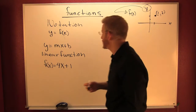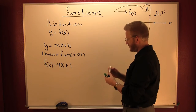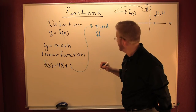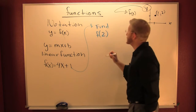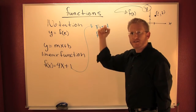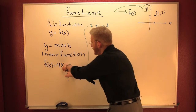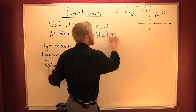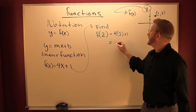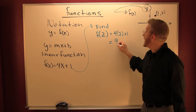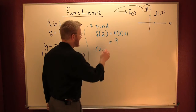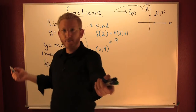This is very similar to what you were doing in the last chapters. What if I wanted to find, using that function, find F of 2? So what do you do? You plug it in. Everywhere I see an X, I'm going to put a 2. I'm replacing that X with 2, so I need to replace all the X's with 2. So this is four times two plus one. That's 8 plus 1, which is nine. What was your X? Two. What was your Y? Nine.